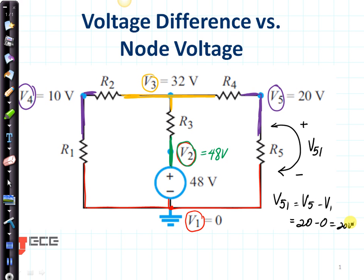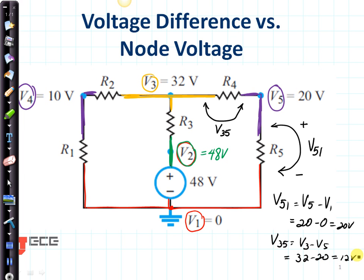Now let's see about the voltage across R4. I can choose to look from V3 to V5 or V5 to V3. Let's consider V3,5 — I can consider either of them. I'll just get a positive sign for one and a negative sign for the other. So V3,5 is going to be equal to V3 minus V5, which is equal to 32 minus 20, or 12 volts. V3 is on the top where the plus sign is, and V2 is on the bottom, so this is going to be V3,2, equal to V3 minus V2, which is 32 minus 48, or minus 16 volts.